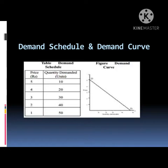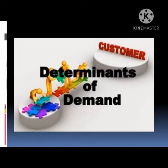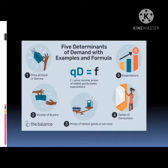Next, we will see the determinants of demand. There are 5 determinants of demand. Here, Qd is equal to f, where Qd is quantity demanded and f is a function. These are all the functions that determine demand.